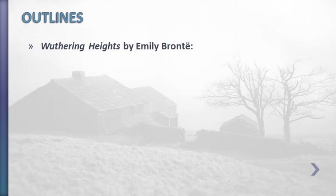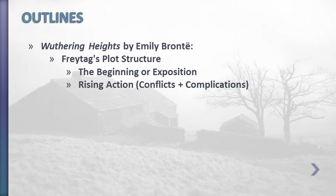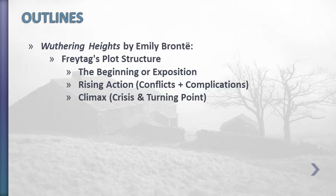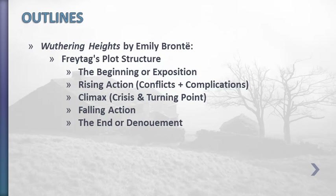This lecture on Wuthering Heights by Emily Brontë tackles two important points. Number one, plot structure, which is divided into five phases. The first phase is called the beginning or exposition. The second phase is called rising action, and it also includes the conflicts and complications. The third phase is called climax, also called the crisis and turning point. The fourth phase is called falling action, and the last phase is called the end or denouement.